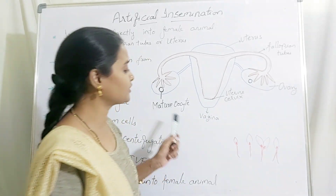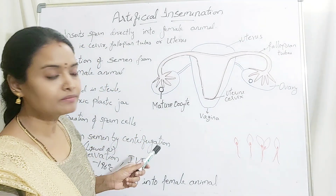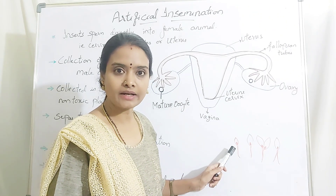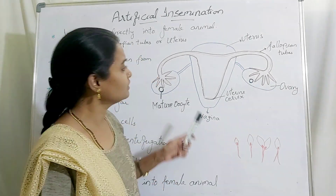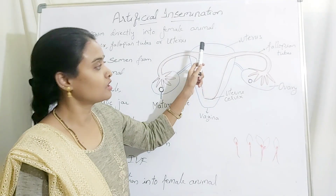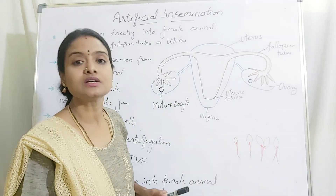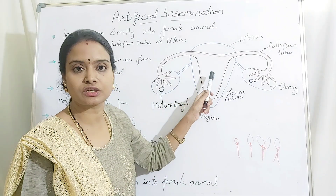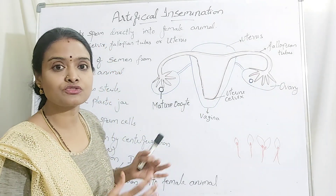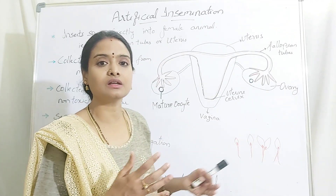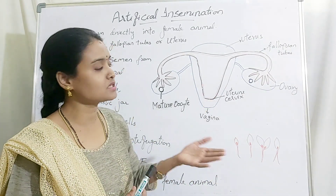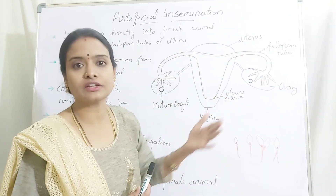From the semen, they separate the motile sperms and then inject them into the uterus, fallopian tubes, or into the cervix of the female reproductive system. In another case, when the two animals are present in very different regions, you can't bring the animals together.